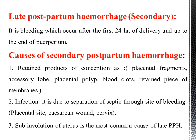Late postpartum hemorrhage — Secondary: it is bleeding which occurs after the first 24 hours of delivery and up to the end of the peripartum period. Causes of secondary postpartum hemorrhage include: retained products of conception such as placental fragment, accessory lobe of placenta, polyp, blood clot, retained piece of membrane; infection due to separation of a septic slough at the placenta site; caesarean wound; cervical sub-involution of the uterus, which is the most common cause of late postpartum hemorrhage.